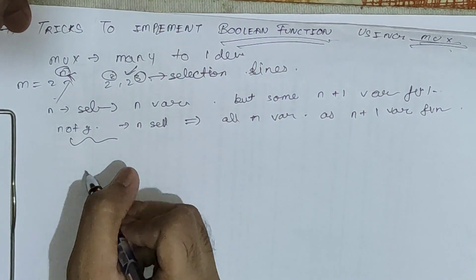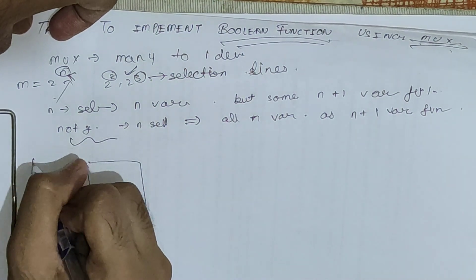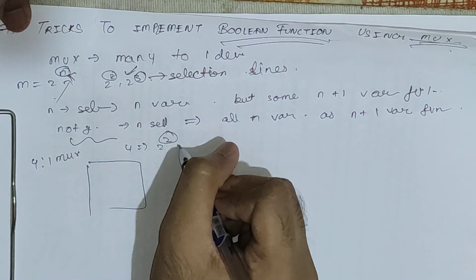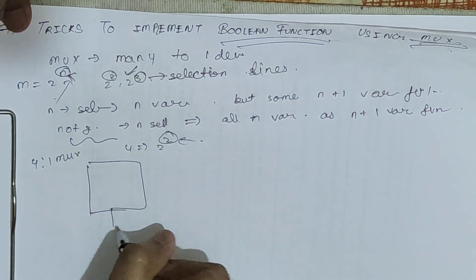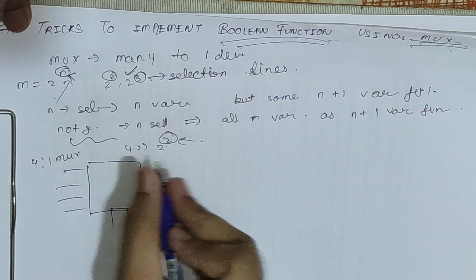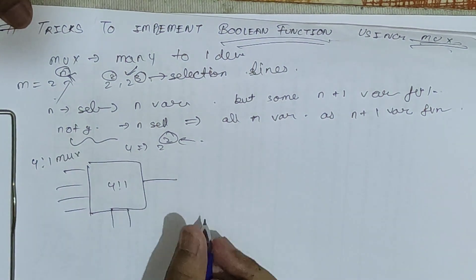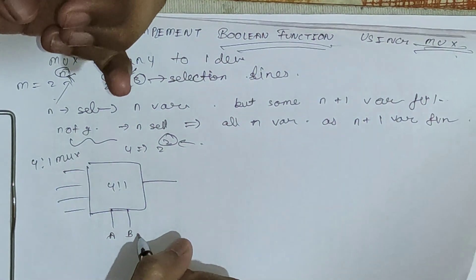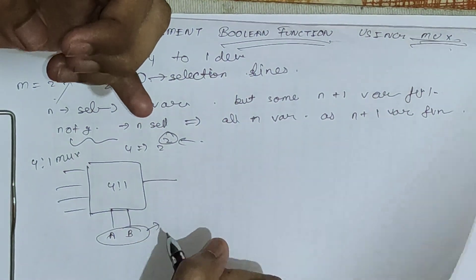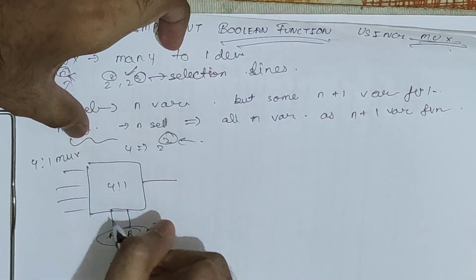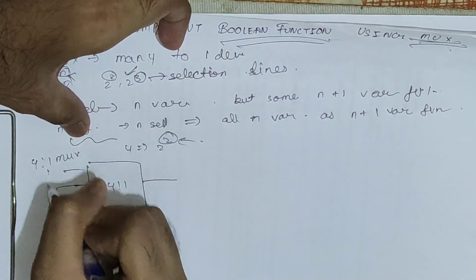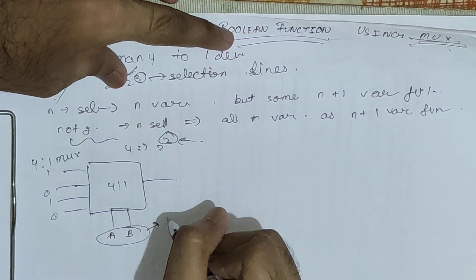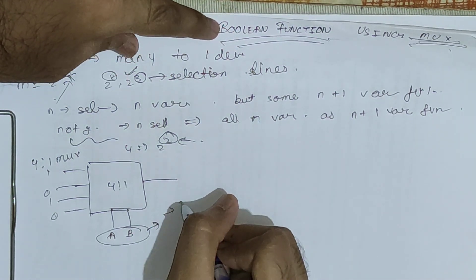For example, if we have a 4-to-1 mux: 4 = 2 raised to 2, so there are 2 selection lines and 4 input lines with 1 output line. With only selection lines a and b, we can implement all 2-variable boolean functions by writing 1, 0, 1, 0 at the inputs to get all combinations.